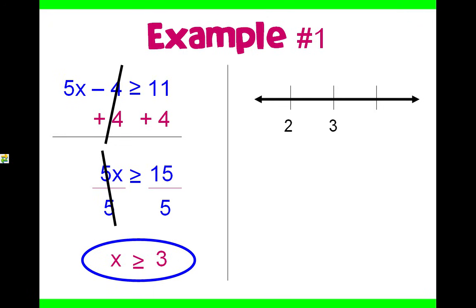Let's graph that. Taking a chunk of the number line, we know that it can be equal to 3, so we shade in our circle. And x is everything that is greater than or equal to 3, so we shade to the right.